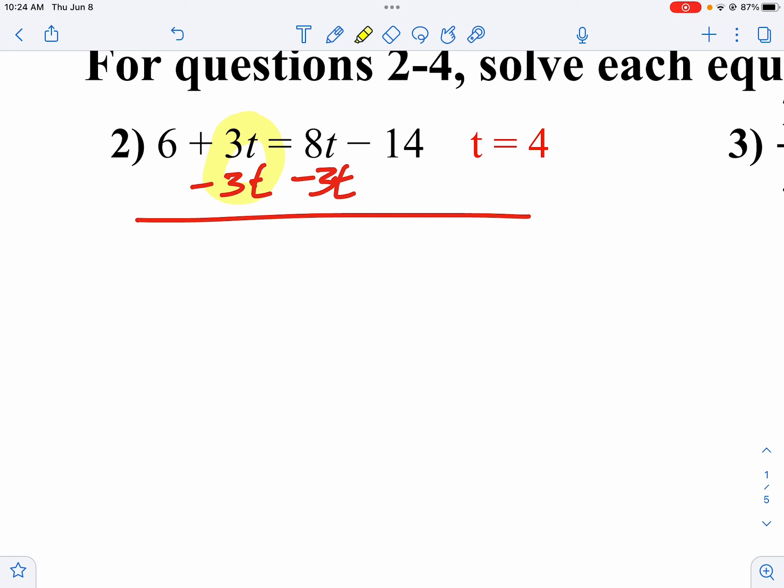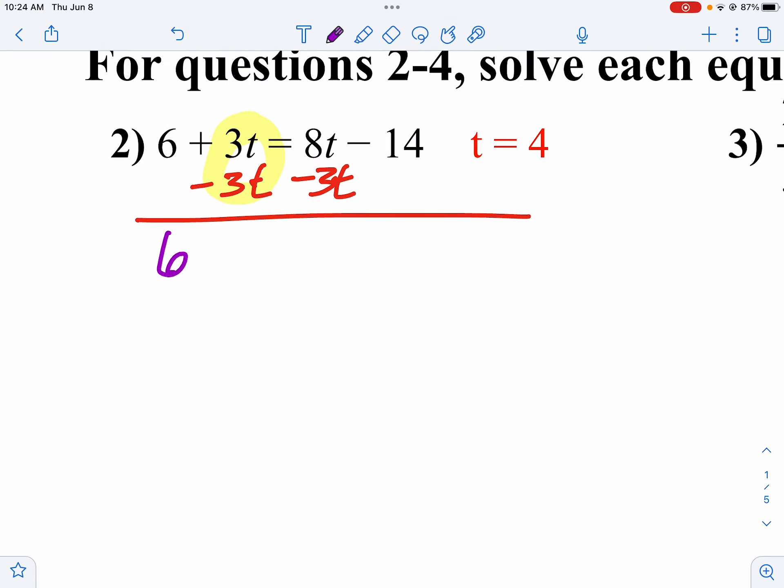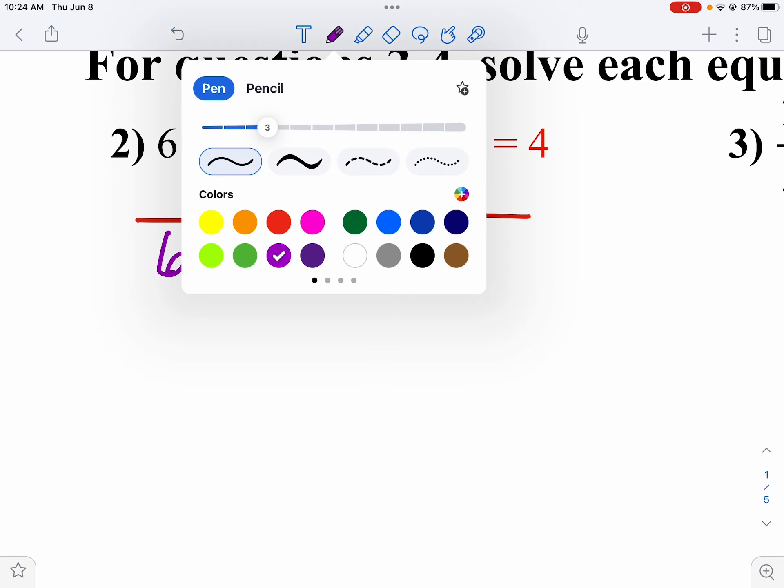Notice, however, I keep my t's in columns. My 3t minus 3t, that makes 0. So I bring down my 6. 8t minus 3t is 5t. Bring down the minus 14. Now it's a two-step equation like we did from the previous lesson.